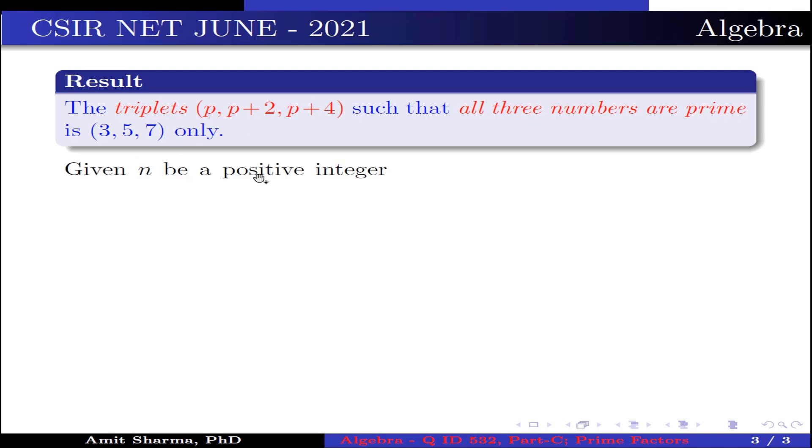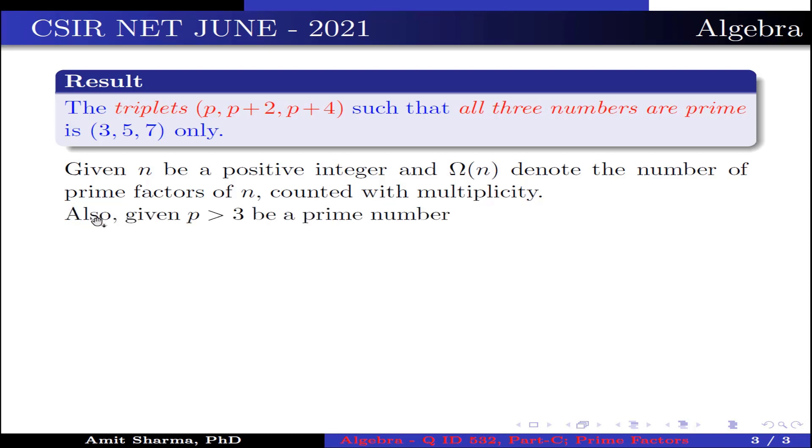Now, given n be a positive integer and Ω(n) denotes the number of prime factors of n counted with multiplicity. Also given, p > 3 be a prime number, and N = p(p+2)(p+4).